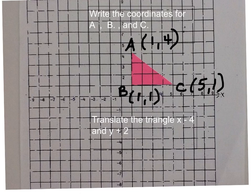So the first move I want you to do is I want you to translate the triangle, x minus 4, and y plus 2. Then restart the video to check your position.